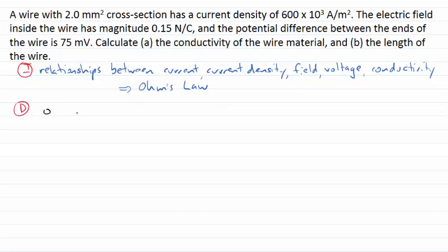Let's start with a quick little diagram here. Basically we have a wire. We don't know the length of the wire. Let's just call that capital L for now. But we do know that there is a 75 millivolt potential difference between the ends of the wire. We also know that inside the wire there's a current density, in this case of 6 by 10 to the 5 amps per square meter. And that current density is due to an electric field that exists in the wire of 0.15 Newtons per Coulomb.